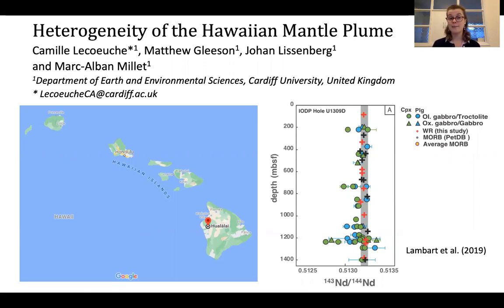However, research by Lambert et al. in 2019 on the heterogeneity of the depleted mantle found that the isotopic composition of minerals from lower crustal cumulates preserved greater heterogeneity than locally erupted mid-ocean ridge basalts.